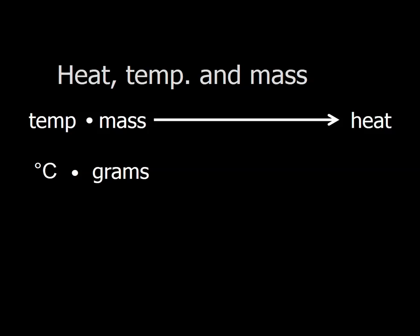So we can put these three properties together into one equation and that will enable us to calculate heat. So if I take temperature and multiply it by mass, the goal is to turn it into heat. Temperature is usually measured in Celsius, mass is usually measured in grams, and heat is measured in joules. So we need a way to convert degrees Celsius times grams into joules.